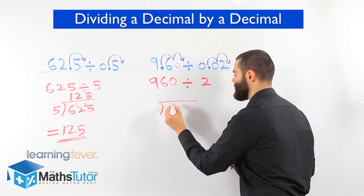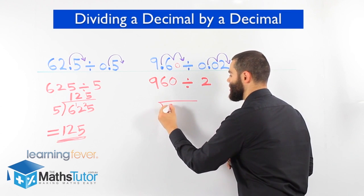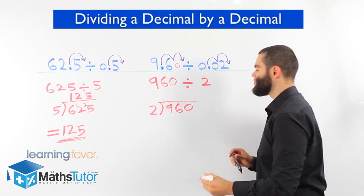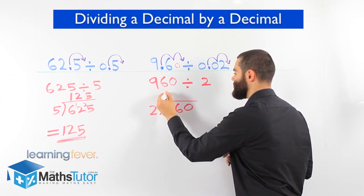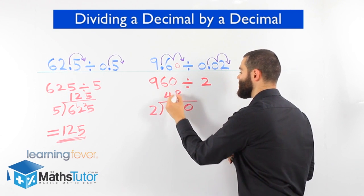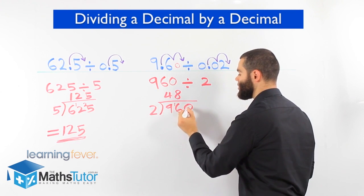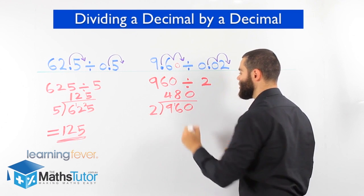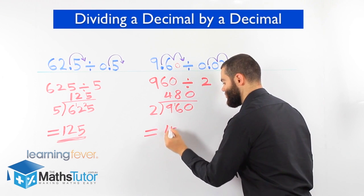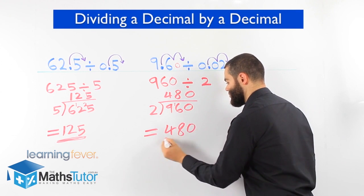Let's do it quickly. So we have 960 here and we have our 2 there. 2 into 9 goes 4 times, remainder 1. 2 into 16 goes 8 times. And 2 into 0 is 0. So 480 is our answer.